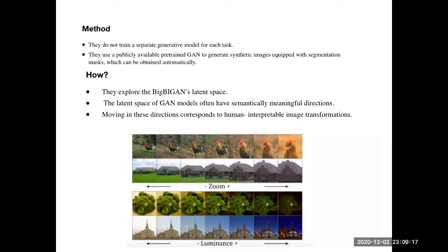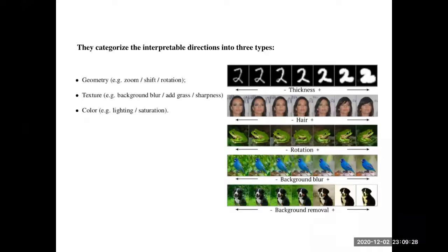In the first paper, they categorize these interpretable directions into three types: geometry — like zoom, shift, rotation; texture — like background blur, adding grass or sharpness; and color changes — like lighting and saturation. There are also domain-specific interpretable directions, such as having glasses or smiling. Those are domain-specific, while the three categories are general.